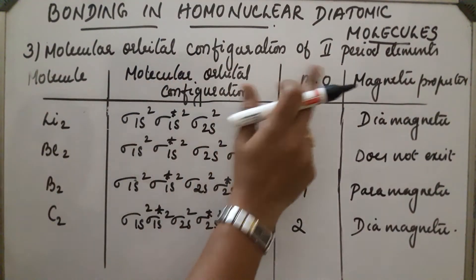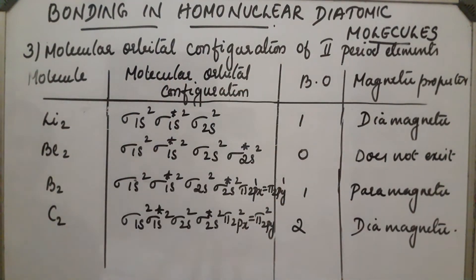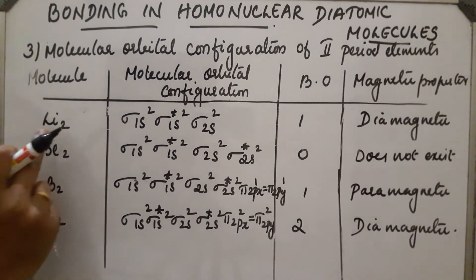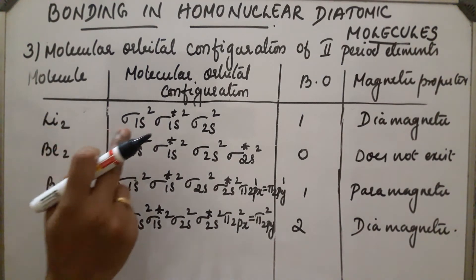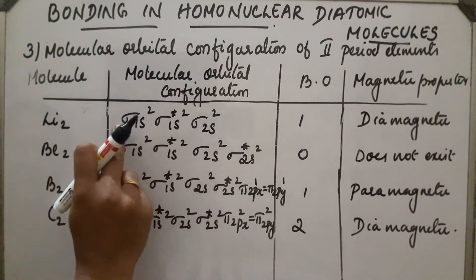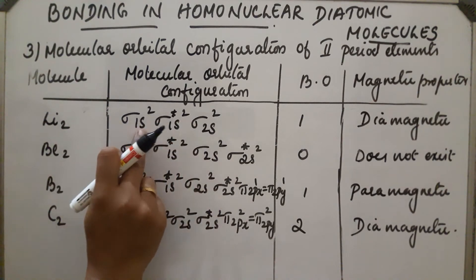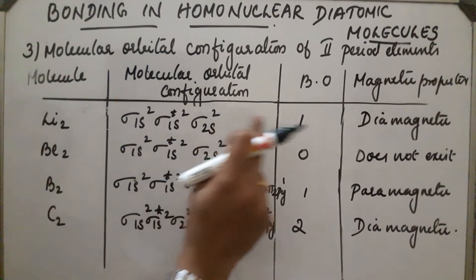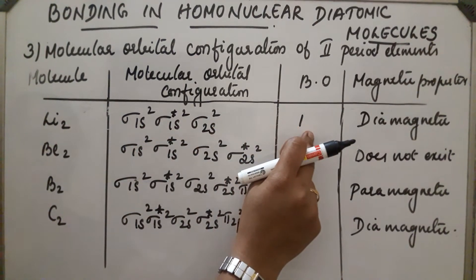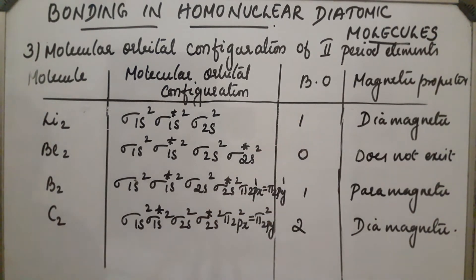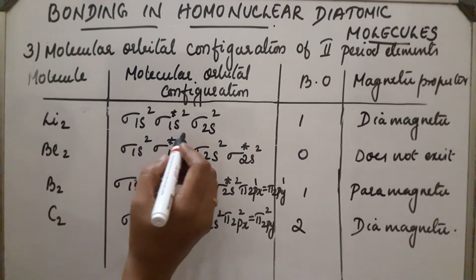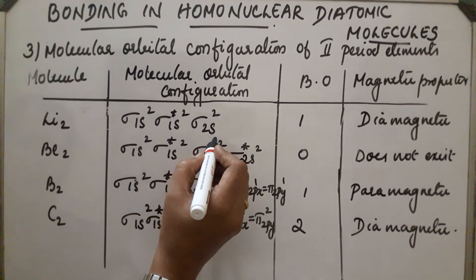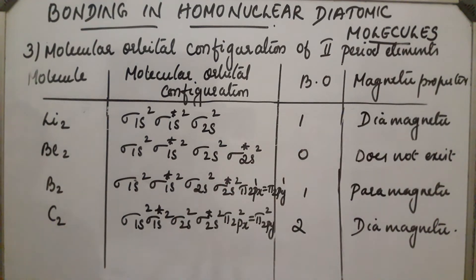Moving to molecular orbital configurations of second period elements. The first molecule is Li₂. Its molecular orbital configuration is sigma 1s², sigma star 1s², sigma 2s². The bond order is 1, calculated using the bond order formula. It contains no unpaired electrons, so it is diamagnetic.